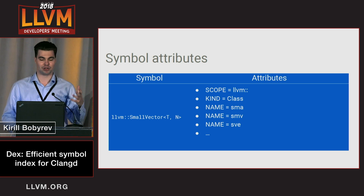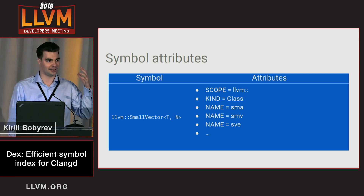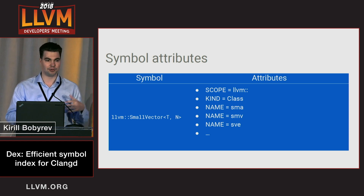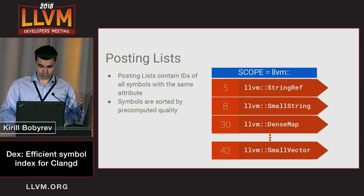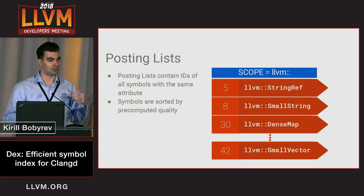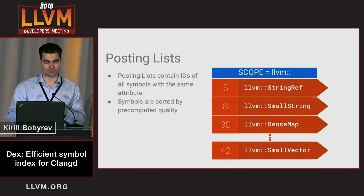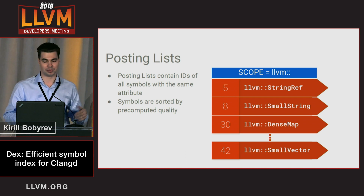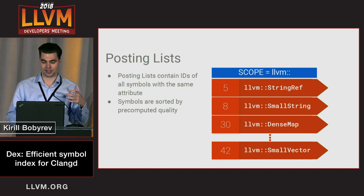The information available to the index includes symbol attributes — for each symbol we know whether it's a class, a function, or a variable. We also have information about the scope, and during the build stage we extract all this information for each specific symbol. Using these attributes, we create posting lists. We pre-rank all the symbols using, for example, number of references, and then for each attribute we store lists of every symbol in that scope, sorted by pre-computed rank.